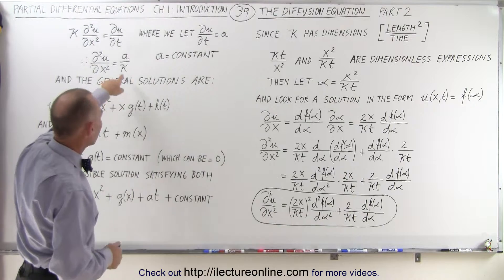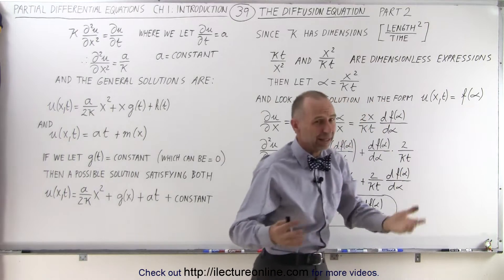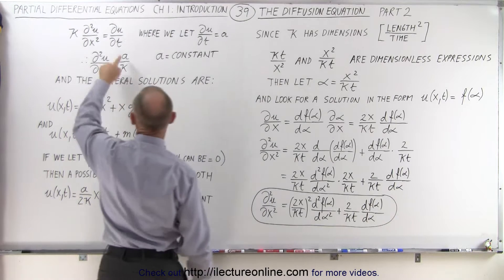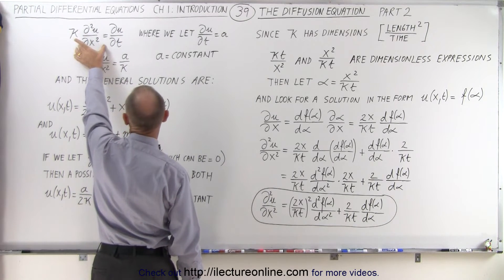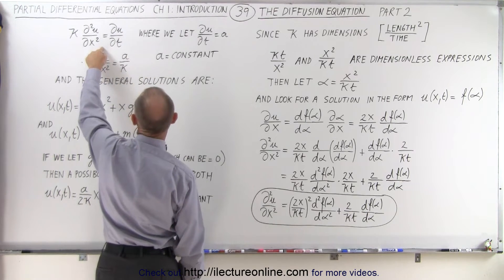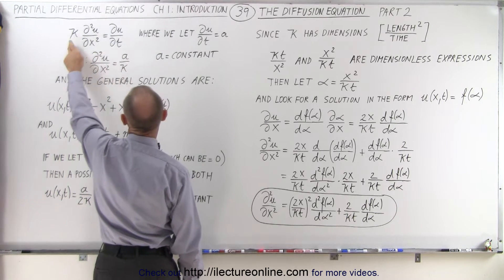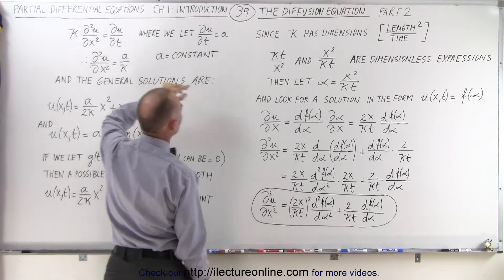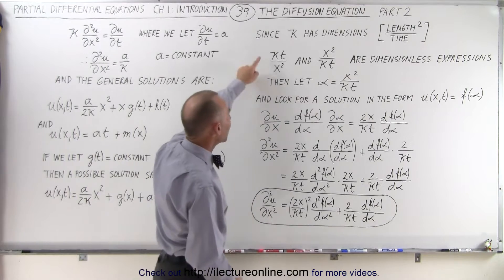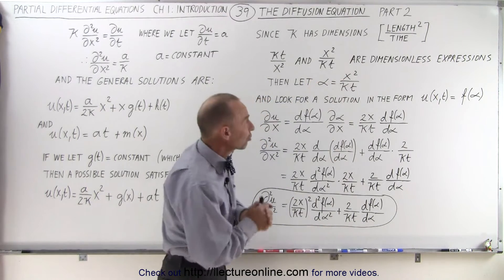Now let's look at this constant a little more. This constant has dimensions of length squared over time, which is the case if we need the original equation to be dimensionally correct. If we divide the right side by the second partial derivative of u with respect to x, that would have units of time, and that would have units of distance squared. Therefore, for k to be dimensionally correct, the dimensions of k must equal length squared over time. So k·t over x squared, and x squared over k times t, must be dimensionless expressions.